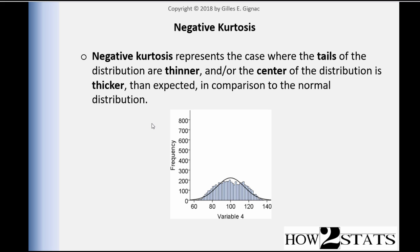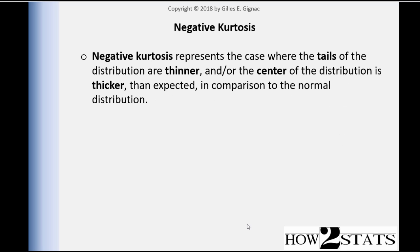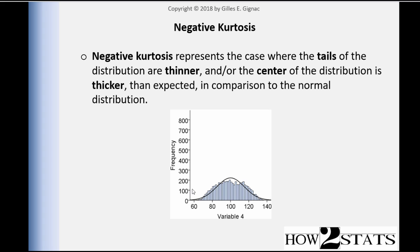A positively kurtotic distribution is tall and skinny, if you will. A negatively kurtotic distribution is short and wide. The kurtosis here is only negative 0.87 — you can get worse, but this is actually quite negatively kurtotic. You don't actually see this in nature very much at all, and the skew is exactly 0 in this case.